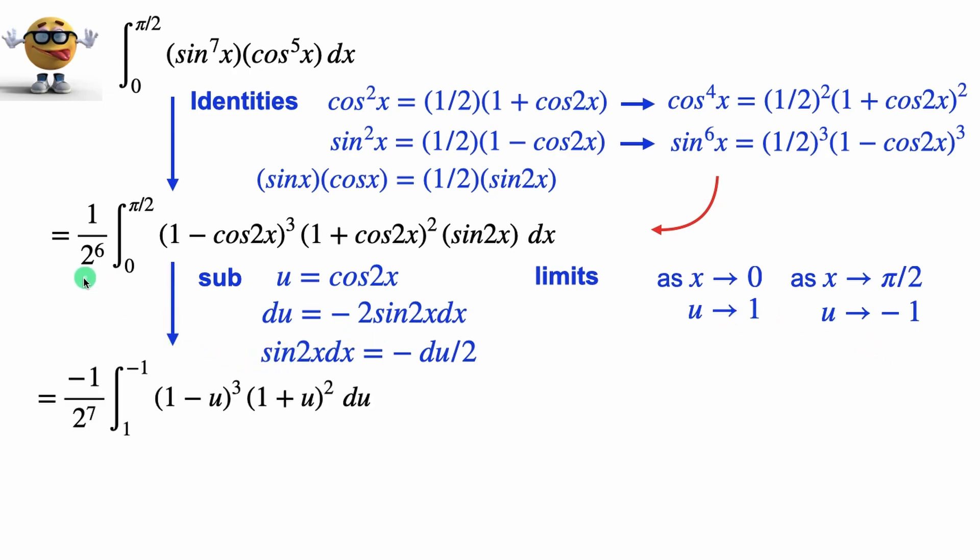So now that we have our limits, we can substitute everything in to give us this right here. Now, we got our limits from one to negative one. This one half to the power of six is now one half to the power of seven, because instead of saying du over two, I brought the negative and the two out in front of the integral. So there's seven one halves here. And then this is now one minus u cubed, because cos 2x is u, and this is now one plus u squared.